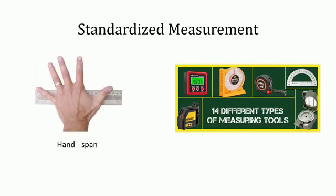Weight is different at different places on the Earth because of fluctuations in the Earth's gravity. To study standardized measurements, let's do an activity. Take a ball of string; let one student from the class measure four hand spans of the string and cut it there. Then let each of the other students in the class also cut four hand spans of string. Now hold all the pieces together by one end — are they all the same length?